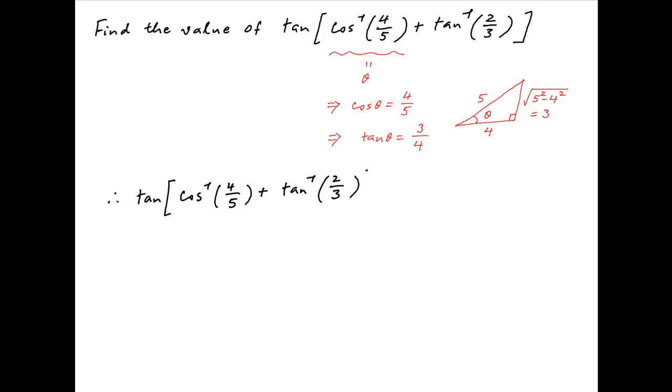Substituting this in the given expression, we get tan of tan inverse 3 upon 4 plus tan inverse 2 upon 3. The tan of a plus b is equal to tan a plus tan b upon 1 minus tan a tan b.